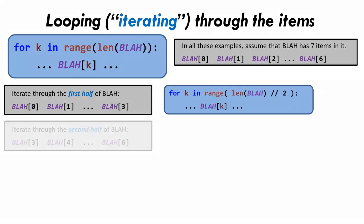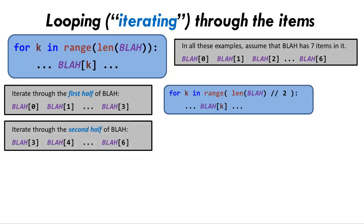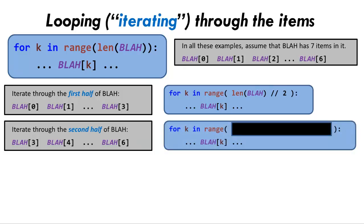Here is another example. Suppose that you want to iterate through the second half of a sequence. Here is the basic pattern again. What range expression would you use to iterate only through the second half of the sequence? Pause the video briefly to think through your answer. Perhaps you saw that a range expression like range(len(sequence) // 2, len(sequence)) will do the trick. We start in the middle, again using the double slash operator for division, and go to the end using the length of the sequence as usual.